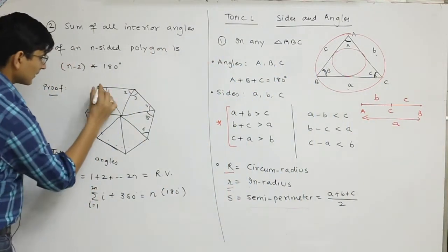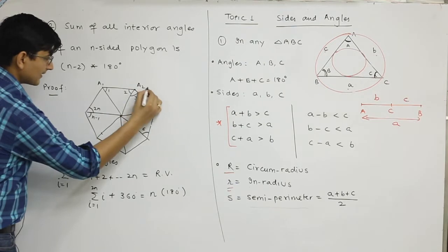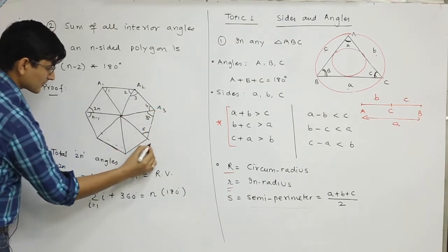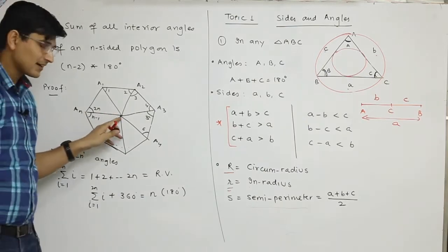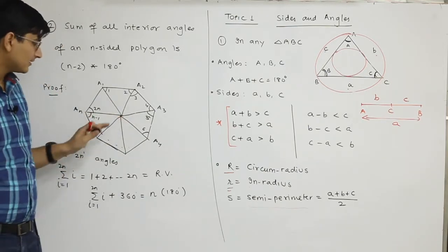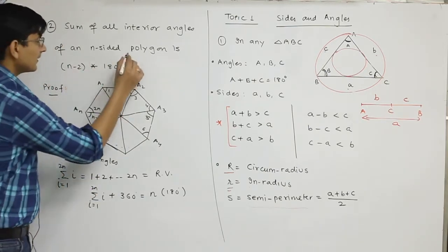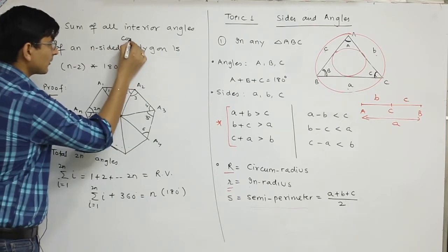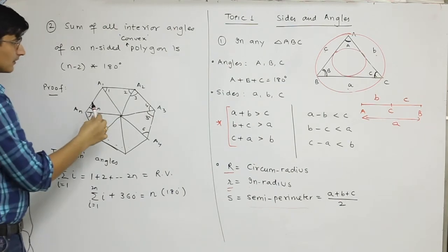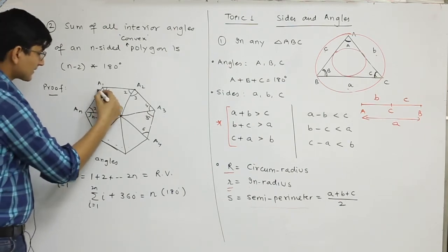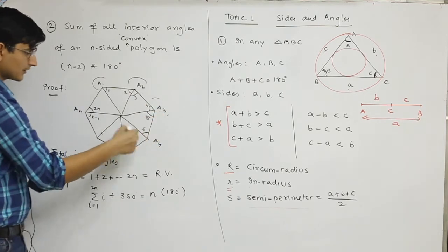I assumed an n-sided polygon whose vertices I labeled a1, a2 up to an. I joined all of them to an arbitrary interior point. This is a convex polygon. Convex polygon means one where the exterior angles formed are obtuse.